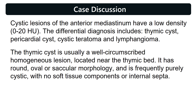The thymic cyst is usually a well-circumscribed homogeneous lesion located near the thymic bed. It has round, oval, or saccular morphology and is frequently purely cystic, with no soft tissue components or internal septa.